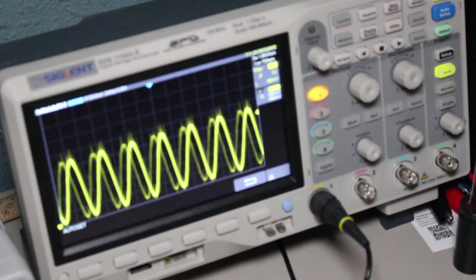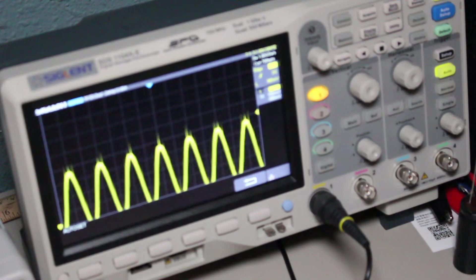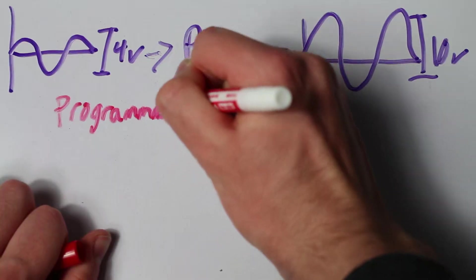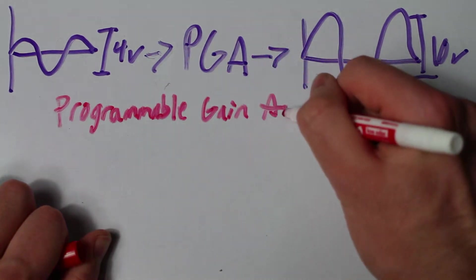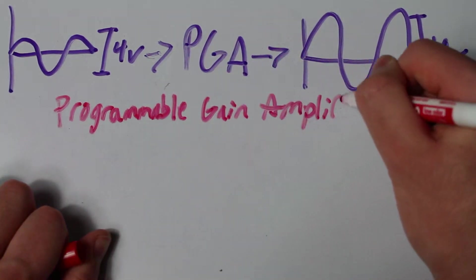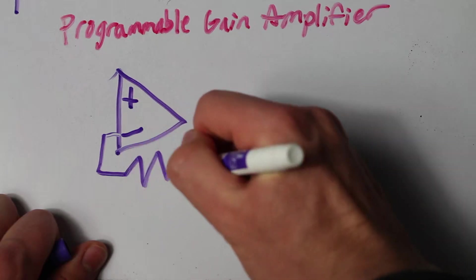Just one more thing involving the analog for this project. We need to be able to alter the amplitude of the generated function, because 4 volts peak to peak isn't always enough. For that, we can use a PGA, otherwise known as a programmable gain amplifier. Since I don't have any dedicated ICs currently, we can make one ourselves.